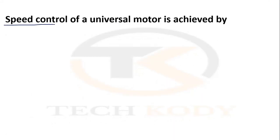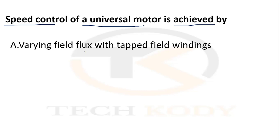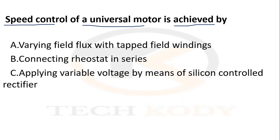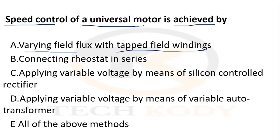The speed control of a universal motor can be achieved by: varying the field flux with tapped field winding, connecting a resistor in series, applying variable voltage by means of a silicon control rectifier (SCR), or applying variable voltage by means of an autotransformer. The answer is all of the above — all these methods can be used to control the speed of a universal motor.